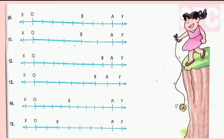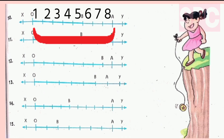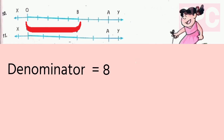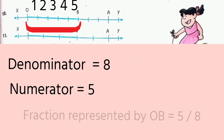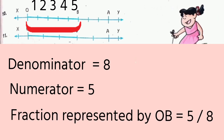Let us move on to question number 10. Let us find out in how many parts OA is divided: 1, 2, 3, 4, 5, 6, 7, 8. OA is divided into 8 equal parts. Now out of 8 equal parts, how many parts are falling under OB? 1, 2, 3, 4, 5. So 5 parts we are considering out of 8 parts. The fraction represented by OB is 5 by 8.